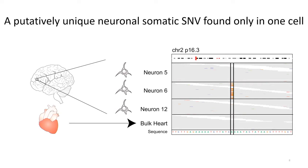We also identified putatively unique somatic variants. Showing whole genome sequencing data from the p-arm of chromosome 2 from the same individual: the bulk heart appears homozygous reference, and neurons 12 and 5 from the prefrontal cortex are the same. But one neuron — neuron 6 — appears heterozygous, with one allele mutated from an A to a G. We can't rule out that other neurons share this mutation, but this is potentially a variant present in one and only one cell in this person's body.